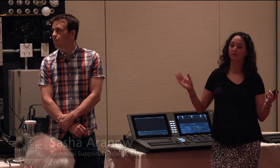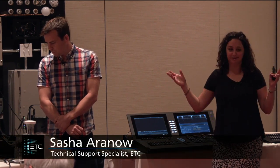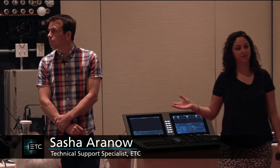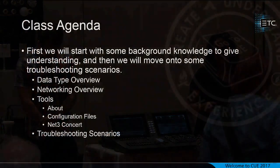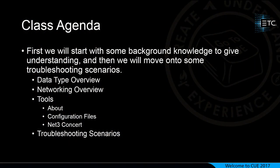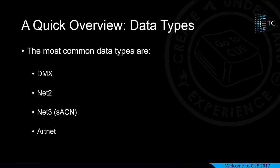We're going to go through our outline for this class. We'll talk about data types and how they get from point A to point B, a little bit of networking overview so you have a good understanding of network topology, some tools you can use to troubleshoot issues in your system, and then some troubleshooting scenarios. Feel free to stick your hand up at any point if you have questions. We'll go pretty quickly through some of these to refresh your minds — a lot of it is covered in other courses as well.